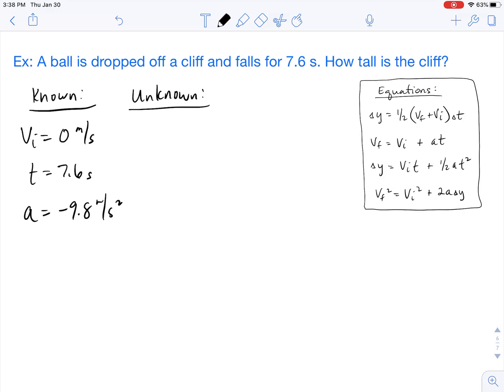Our unknown in the problem, they're asking how tall is the cliff, so our delta y represents the height. Because this is a constant acceleration problem, we have four different equations for constant acceleration.